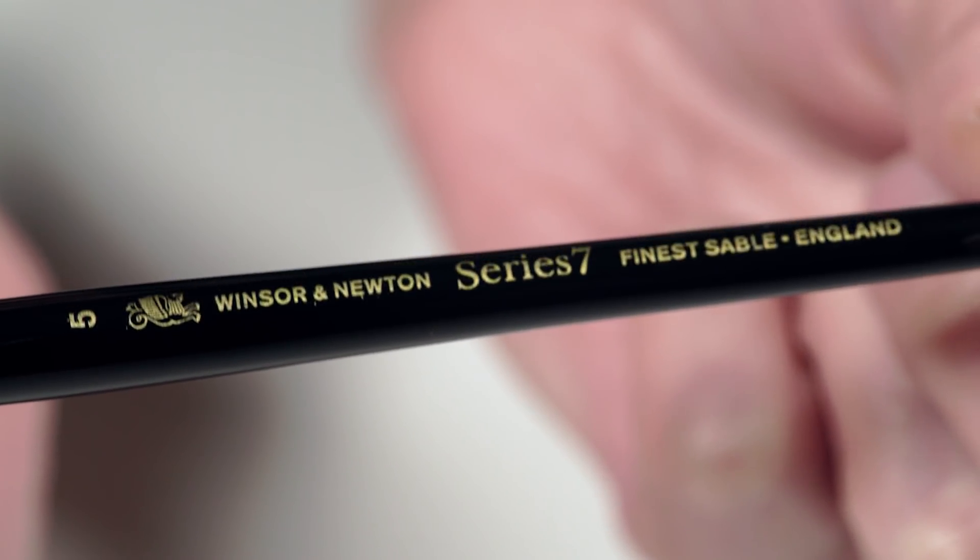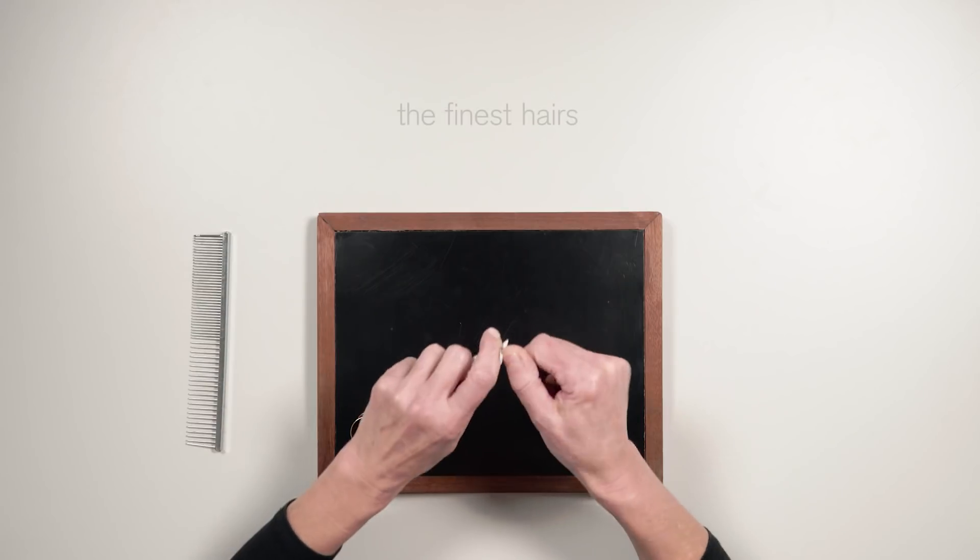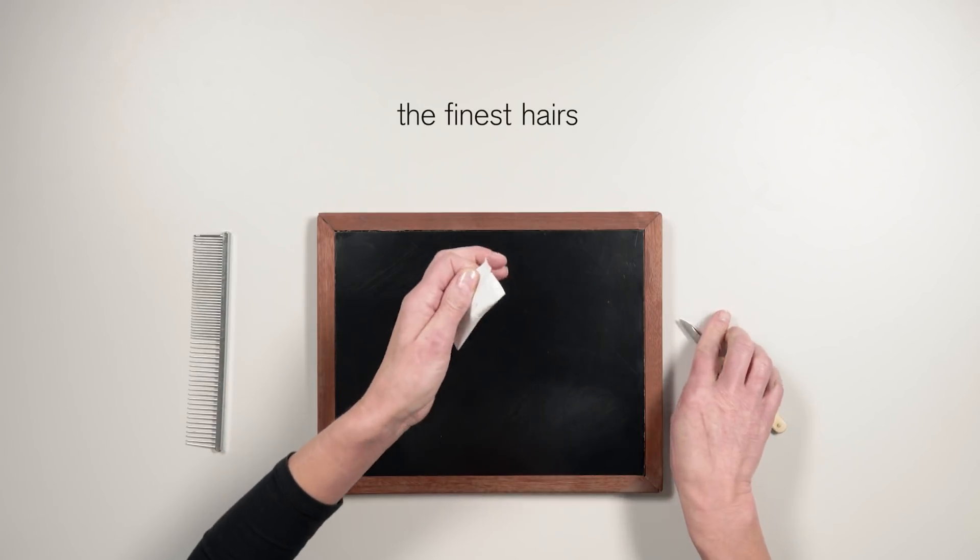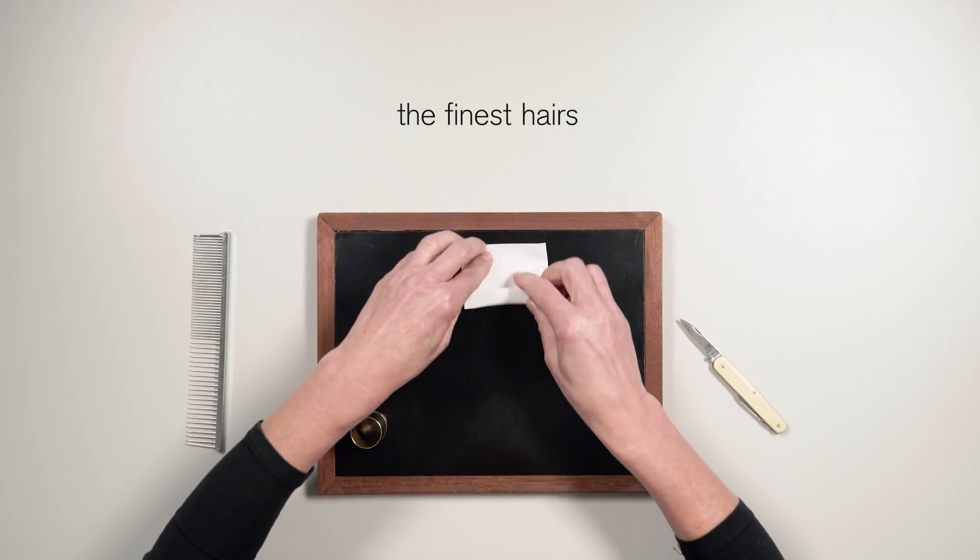Every Series 7 brush is handmade with unique attention to detail. We start by measuring every strand of the finest Kalinske hair.